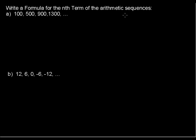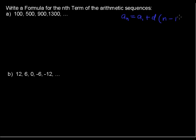The general form for an arithmetic sequence is that the nth term equals the first term a sub 1 plus the arithmetic difference between each term times n minus 1.